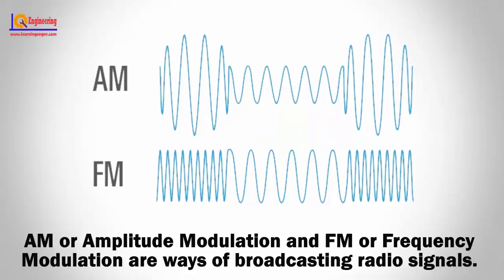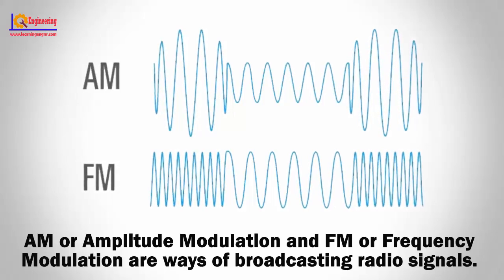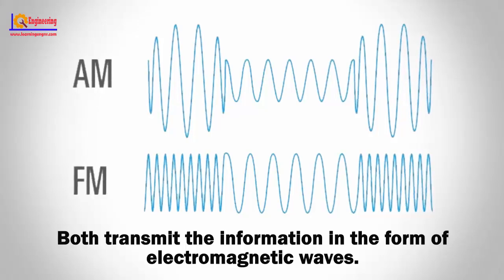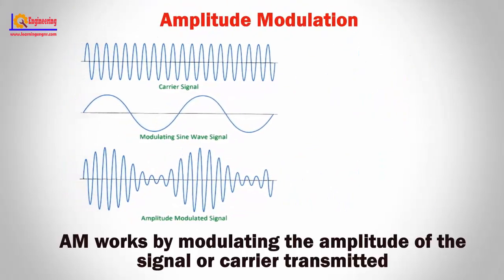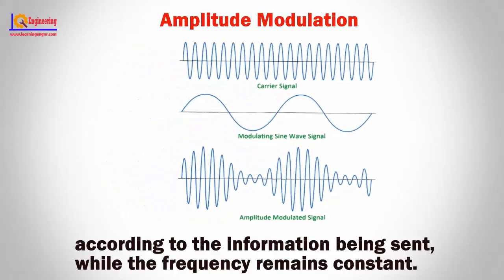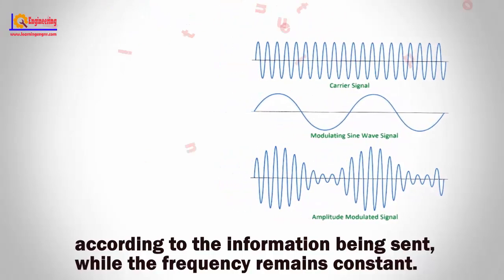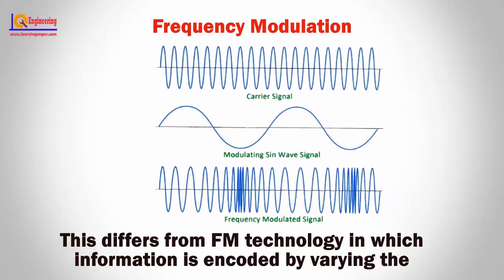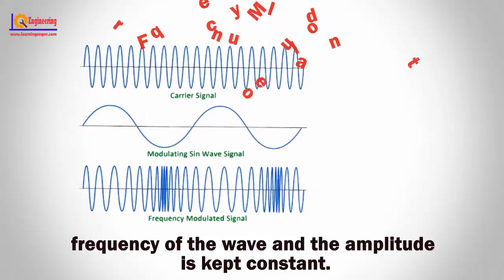AM or Amplitude Modulation and FM or Frequency Modulation are ways of broadcasting radio signals. Both transmit information in the form of electromagnetic waves. AM works by modulating the amplitude of the carrier signal according to the information being sent, while the frequency remains constant. This differs from FM, in which information is encoded by varying the frequency of the wave while the amplitude is kept constant.